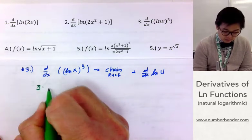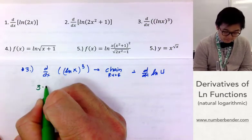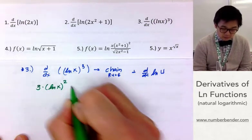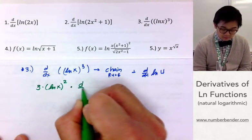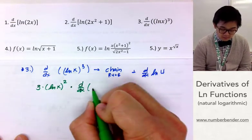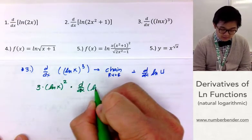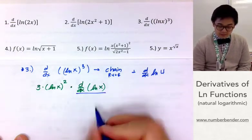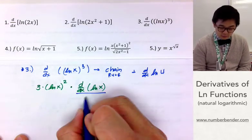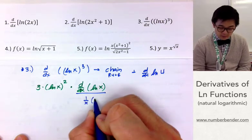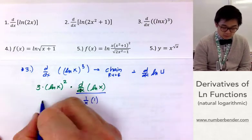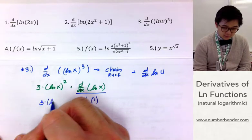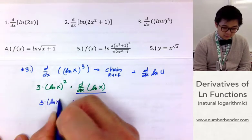Using the chain rule for (ln x)³, it will be 3 multiplied by (ln x)² times the derivative of the inside, which is ln x. We know the derivative of ln x is 1 over x times du/dx, which is 1. We just have to multiply it by 3(ln x)².